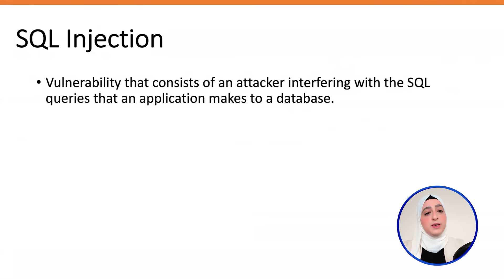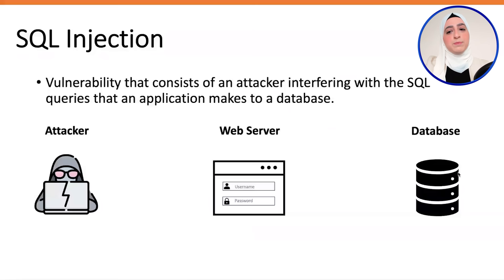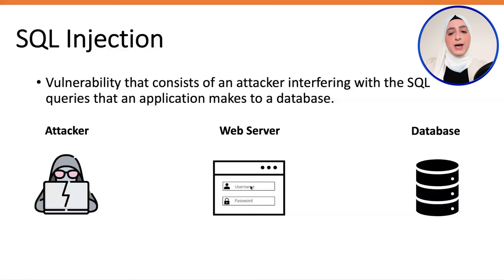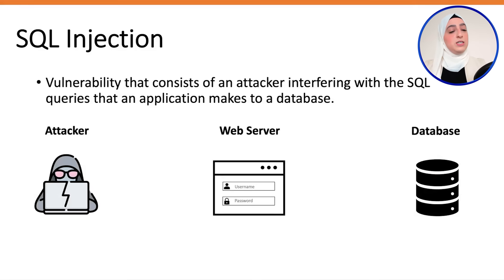Let's take an example to better understand this. Imagine you have an attacker, a web server, and a database. The application has some kind of authentication mechanism — in this case, a username and password, form-based authentication. It asks you for your username and password. If you enter the correct credentials, it makes a query to the backend database. If they exist in the backend database, it logs you into your account. If they don't exist, it gives you an error saying you entered either an incorrect username or incorrect password.